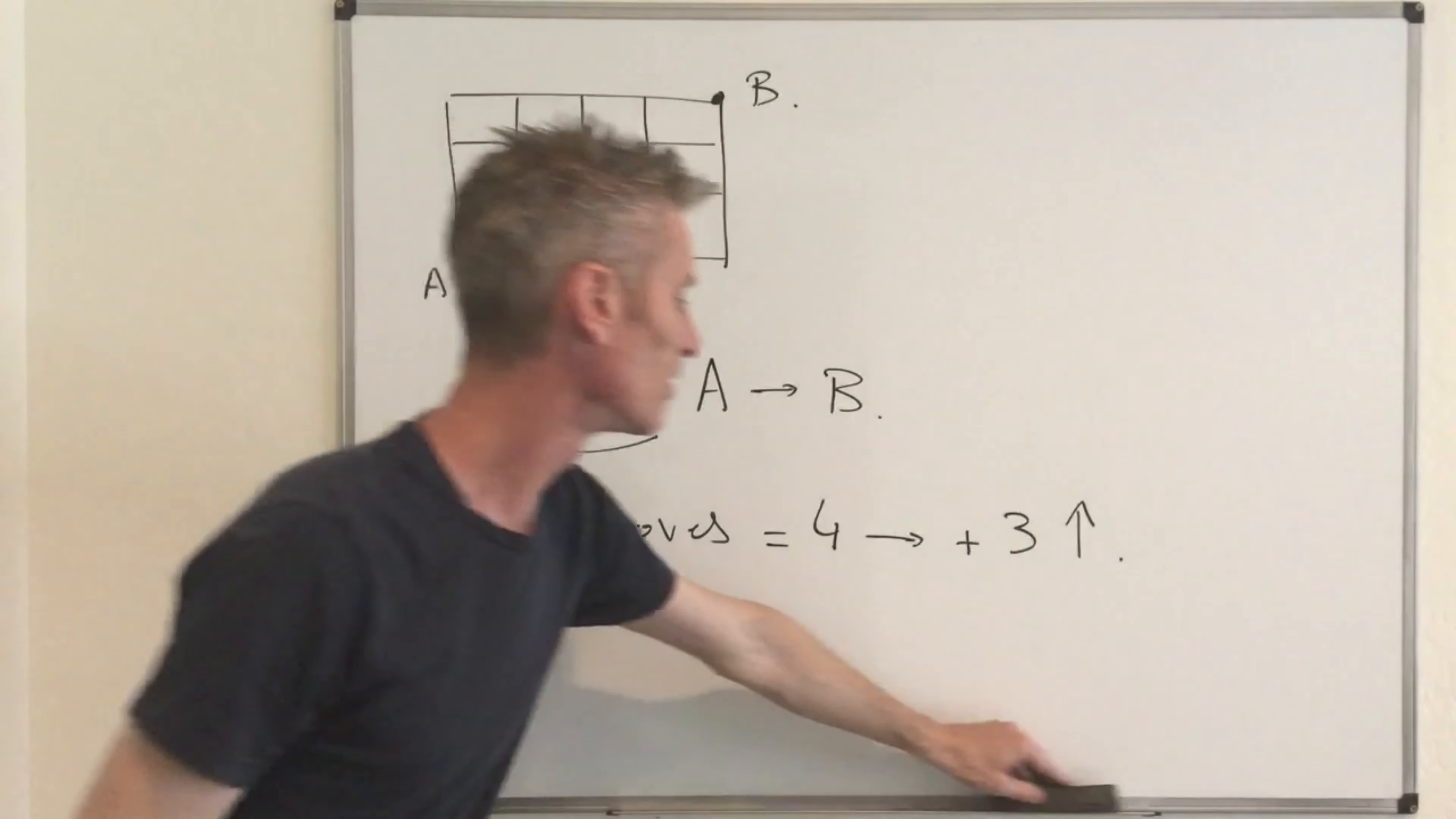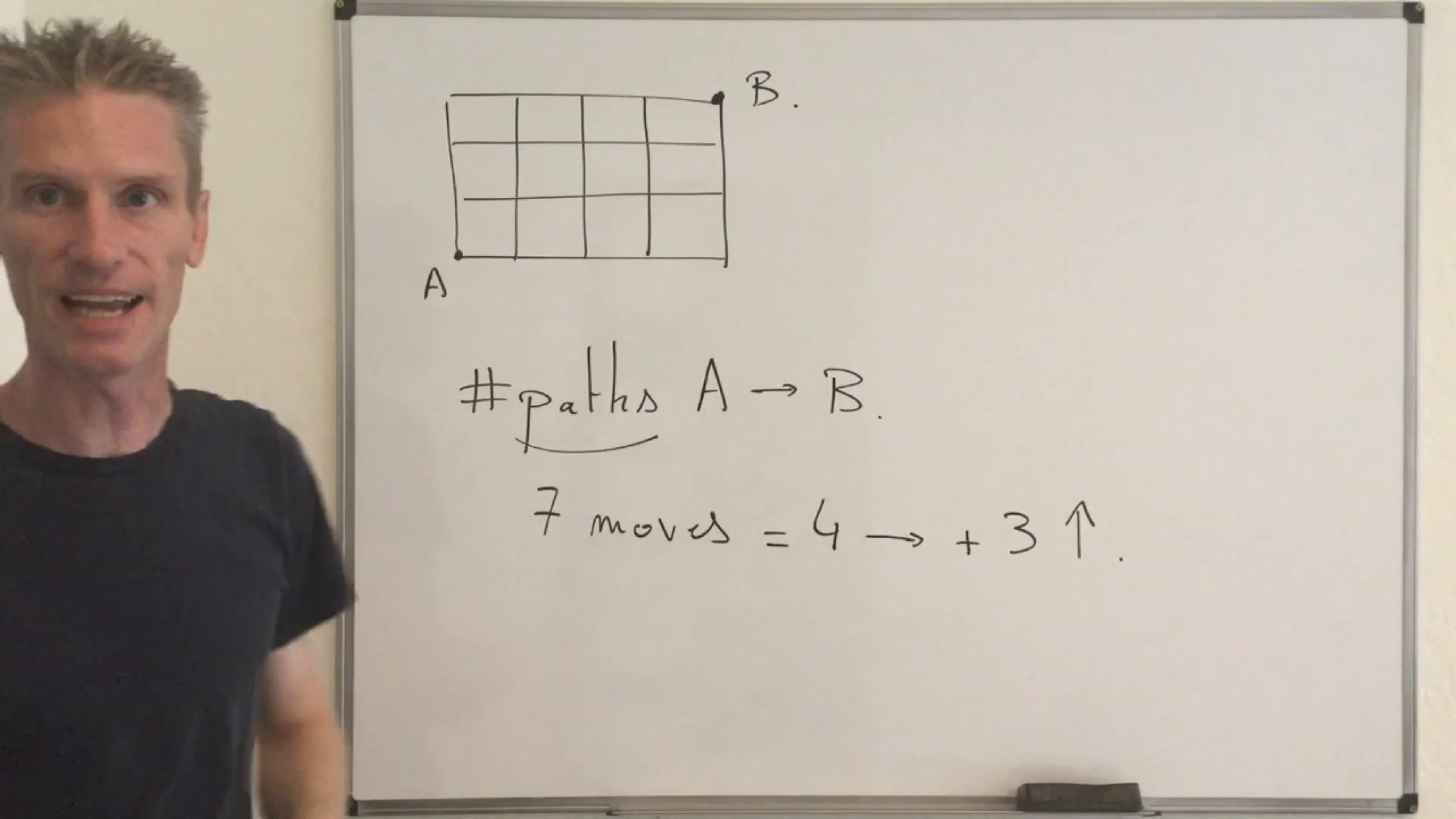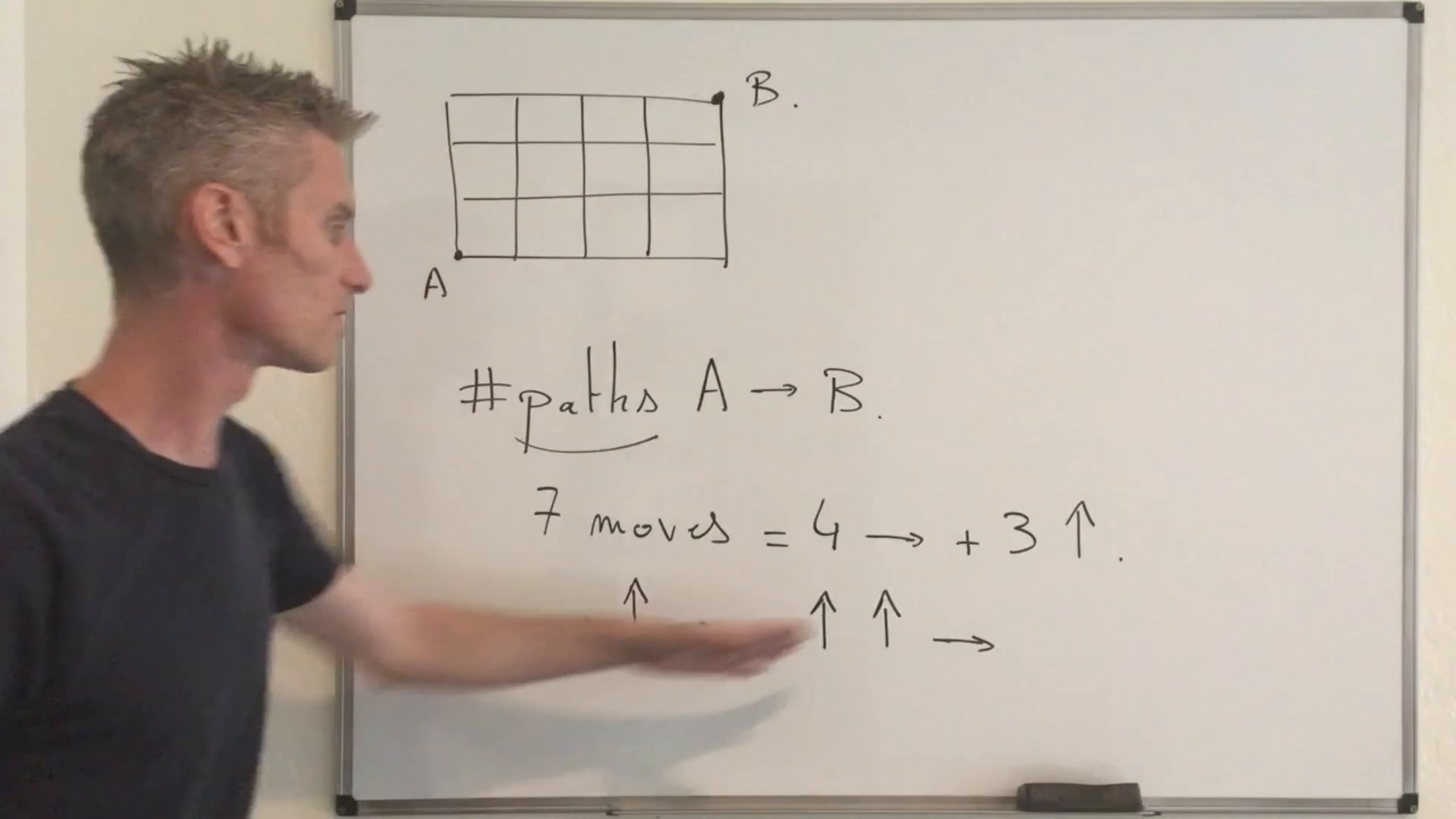Now the last step is really to observe that there is in fact a one to one correspondence between all the possible orderings of those seven arrows, seven arrows, where you have four arrows going right and three arrows going up, and the set of paths going from A to B. So if you fix a specific sequence, so let's say right, up, right, right, right, up, up, right. This sequence, so you have indeed one, two, three, four arrows going right, three arrows going up.